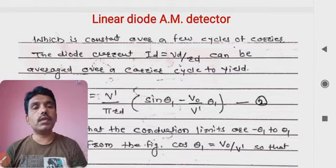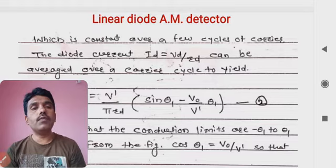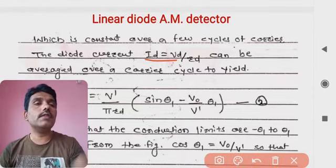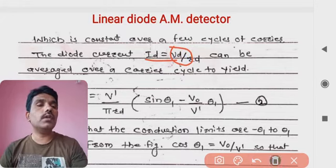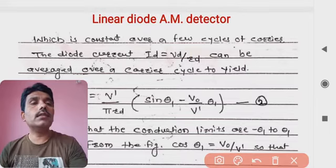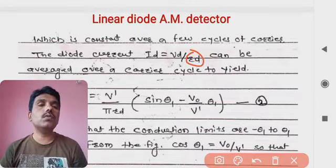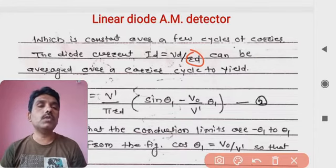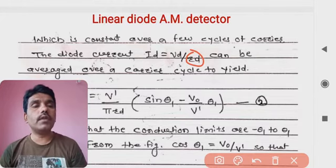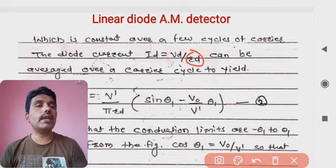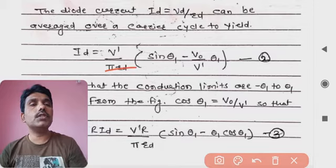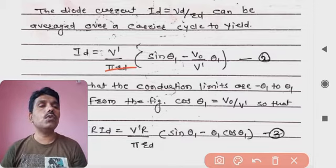The diode current flows for the given diode voltage. The diode current id is represented as id = vd / rd, where rd is the diode resistance, following Ohm's law. The average over the carrier cycle yields the final id relation written as: id = (V-dash / π·rd)·(sin θ1 − (V0/V-dash)·θ1).